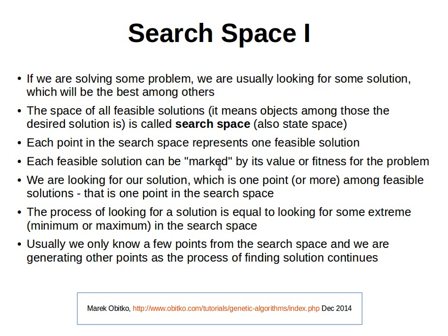Each possible or feasible solution can be marked by its value or fitness for the problem — how good a solution it is. What we're looking for is our solution, which is one point or more, because some problems can have multiple solutions amongst the feasible solutions. There is geometry here, so you have to use your imagination and imagine the space of all possible solutions, which we are navigating — flying or sailing throughout that space — trying to find the best solution.